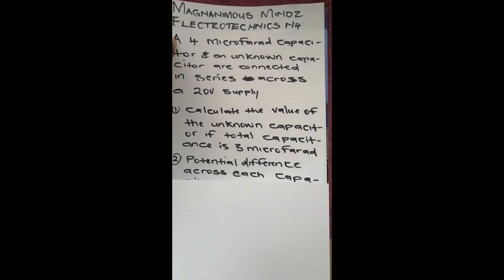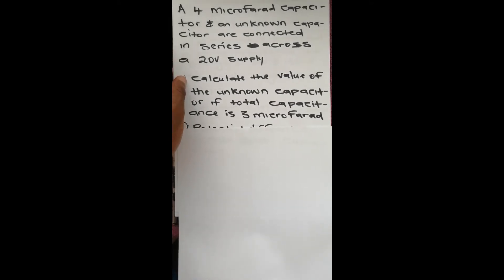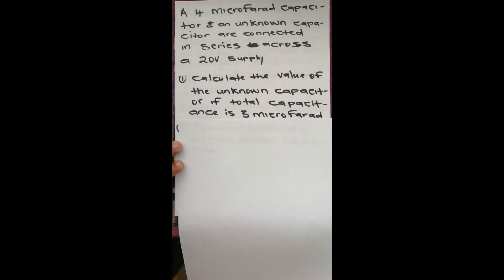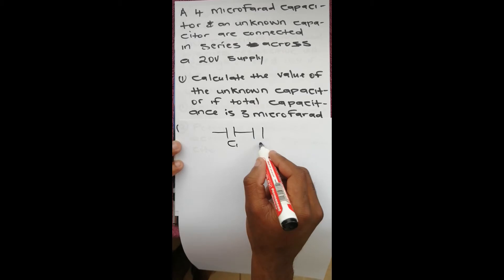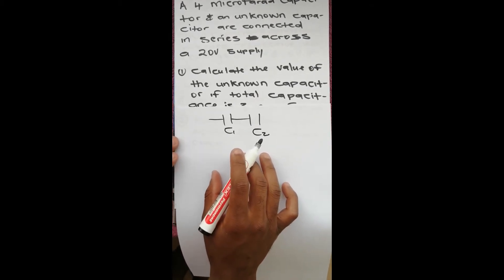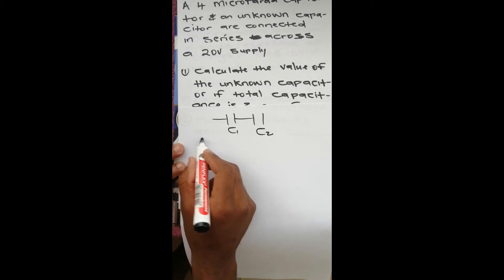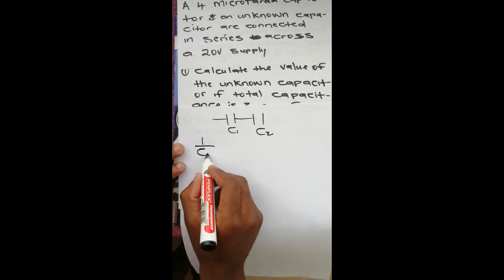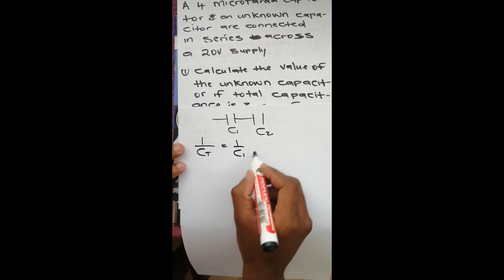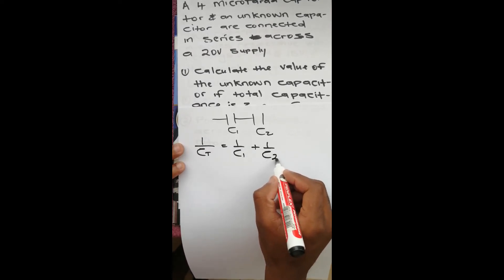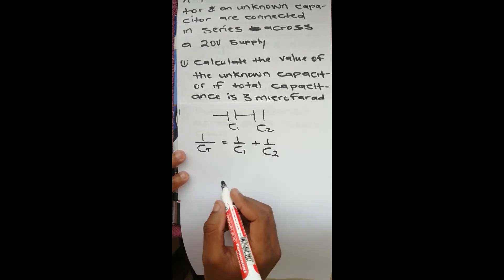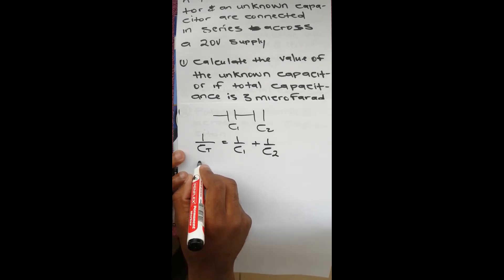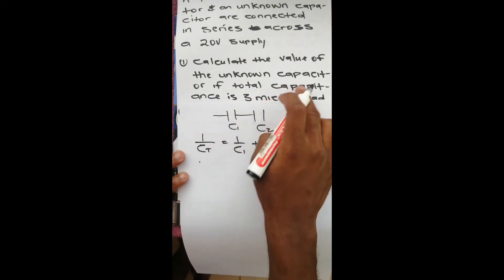For the first question, calculate the value of the unknown capacitor. We know that if capacitors are connected in series with C1 and C2, the total capacitance is calculated using the formula: one over CT equals one over C1 plus one over C2. Our total capacitance is given as 3 microfarads.